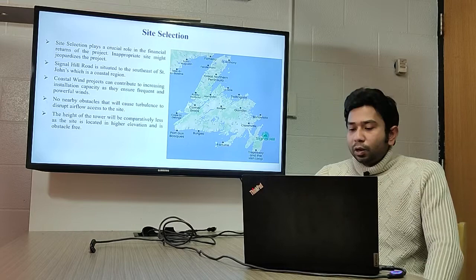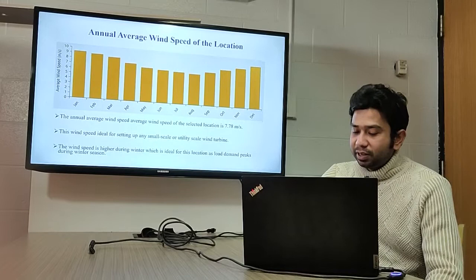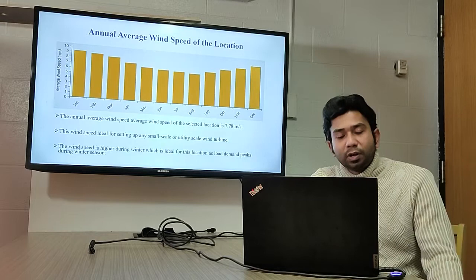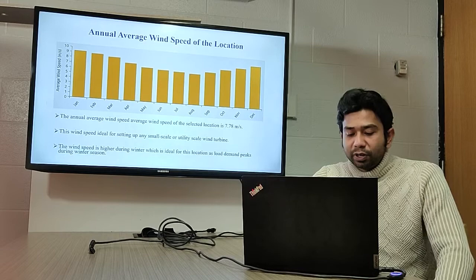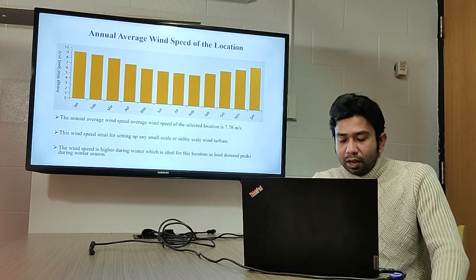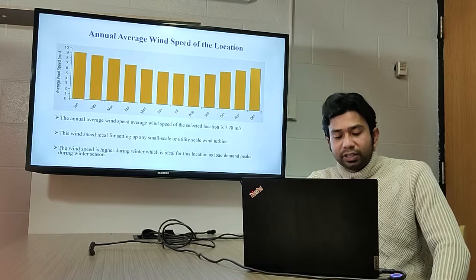This figure shows monthly average wind speed in a year. We relied on HOMER Pro software to collect up-to-date wind data of this location, observing weather information over the past 30 years using this software to extract the annual average wind speed. The annual average wind speed is 7.78 meters per second, which is optimum for any small-scale wind turbine to produce its rated generation.